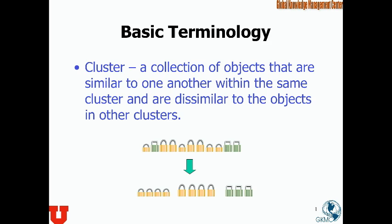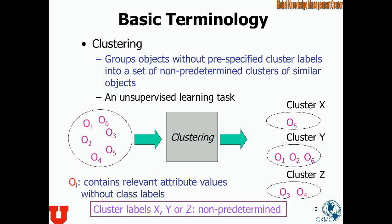A cluster intuitively means what it sounds like: a collection of objects that are similar to each other within a cluster. Usually when we do clustering we generate multiple clusters, and that's the reason for doing grouping. Another important property of clusters is that objects belonging to different clusters are dissimilar to each other. So objects in one cluster are more similar to each other than to objects in other clusters.